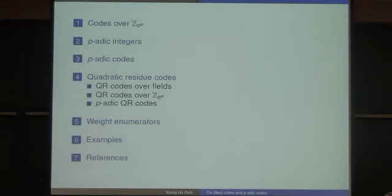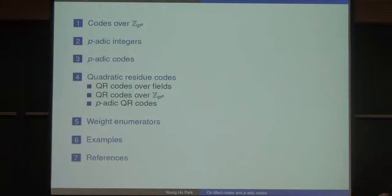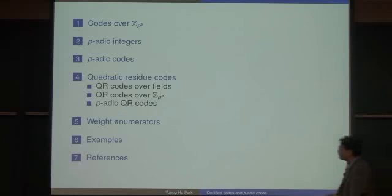I'll talk about the code of Z/p^e and then next talk about the p-adic integers and p-adic codes. The modular quadratic residue codes are a very good example for liftings and the weight enumerators. In Section 5, I'll talk about how to compute weight enumerators for the lifted codes, and then I'll give examples.